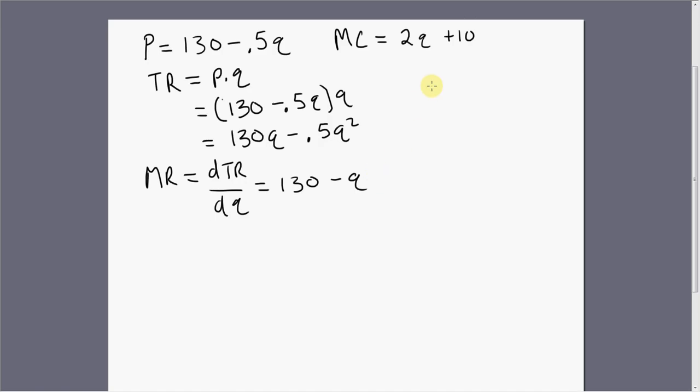Let's set marginal revenue equal to marginal cost. So we get 3Q equals 120. The firm should produce 40 units of output to maximize profit.